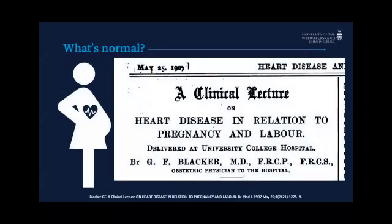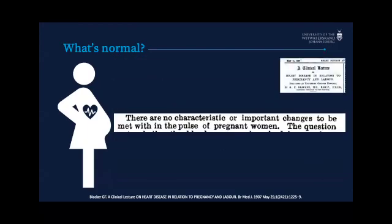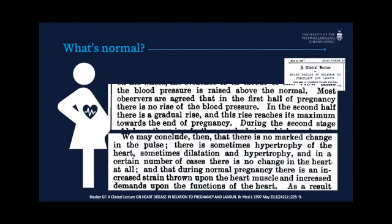This 1907 BMJ article is highlighted to show how advanced they were — they had an obstetric physician back then. But Dr. Blacker was a bit off the mark, stating there are no changes worth mentioning in the pulse of a pregnant woman. In 1959, a review stated that during pregnancy resting heart rate goes up about 10 beats per minute, reaching a peak in the eighth lunar month. They used postpartum as baseline, so the pulse went up from 66 to 87 — a 21 beats per minute, 32% increase.